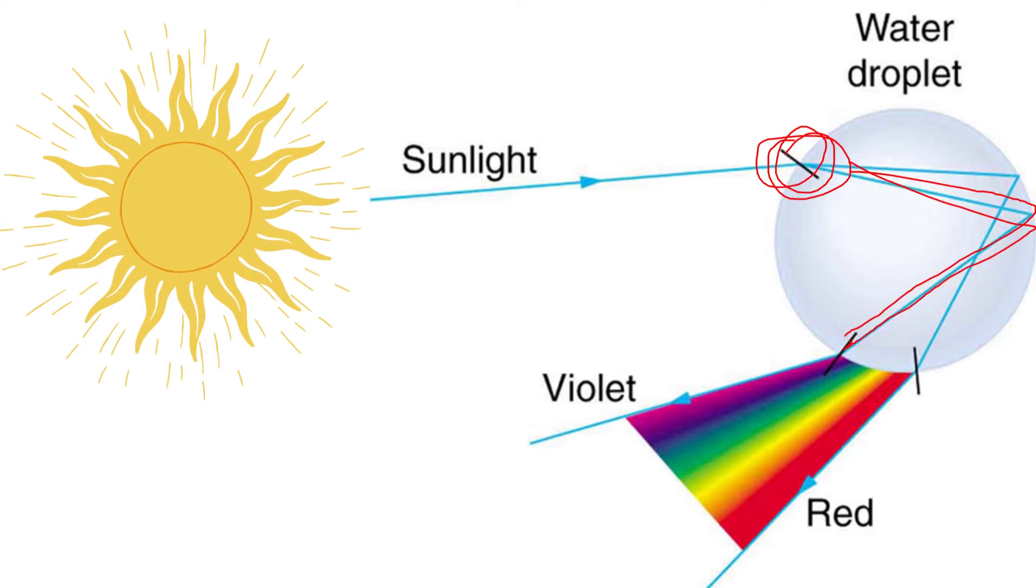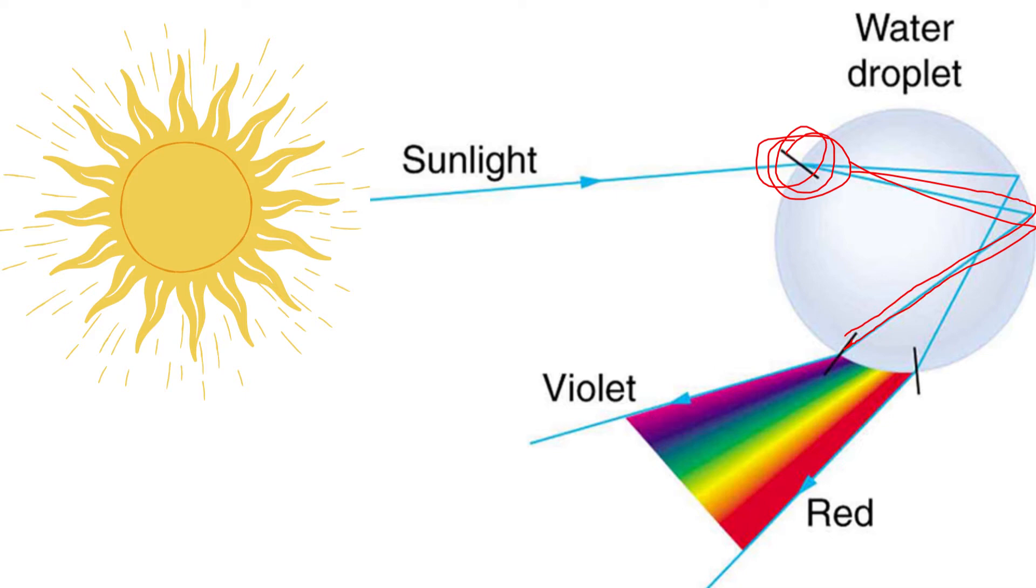After that, the rainbow effect occurs because the light is reflected inside the droplets. As the rays get refracted once more, the different wavelengths are affected to different extents, resulting in the clear formation of the rainbow colors.